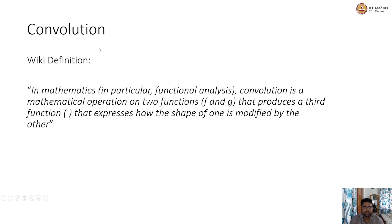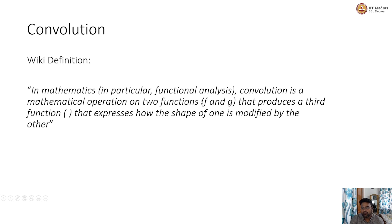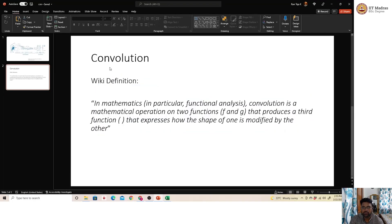Before going further, let's look at the definition of convolution. Based on Wikipedia: convolution is a mathematical operation on two functions that produces a third function expressing how the shape of one is modified by the other. The key takeaway is 'how the shape of one is modified by the other.' We have two functions, f and g, according to this definition.